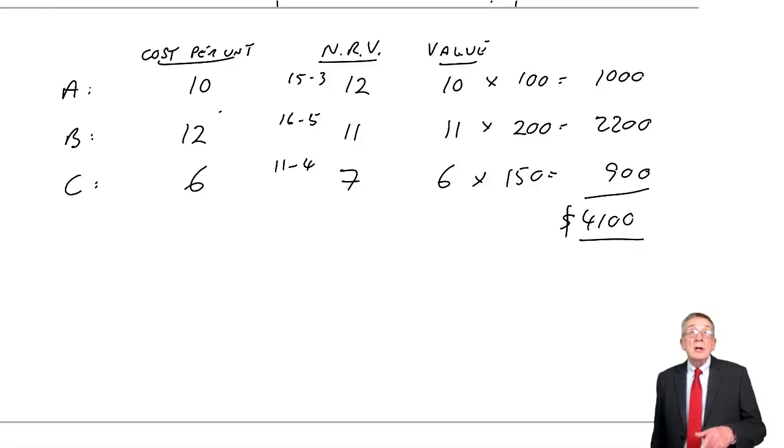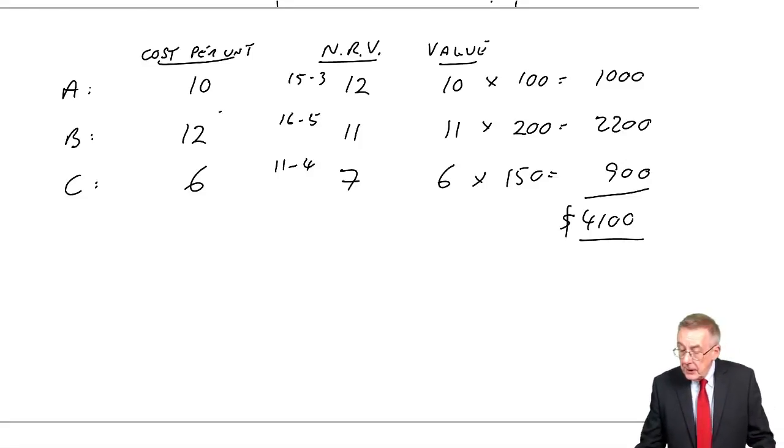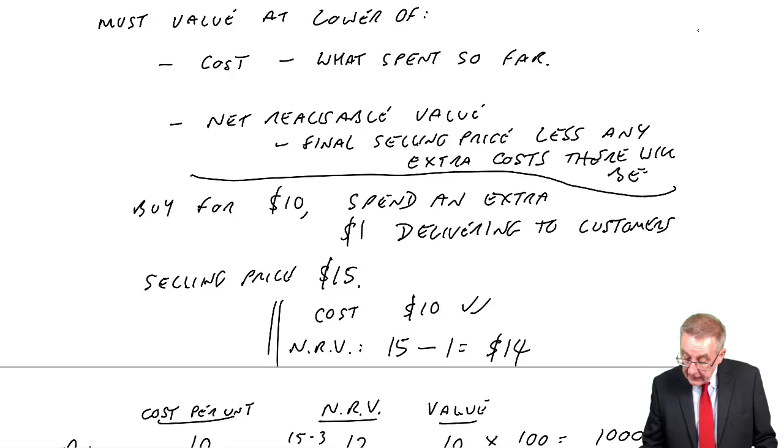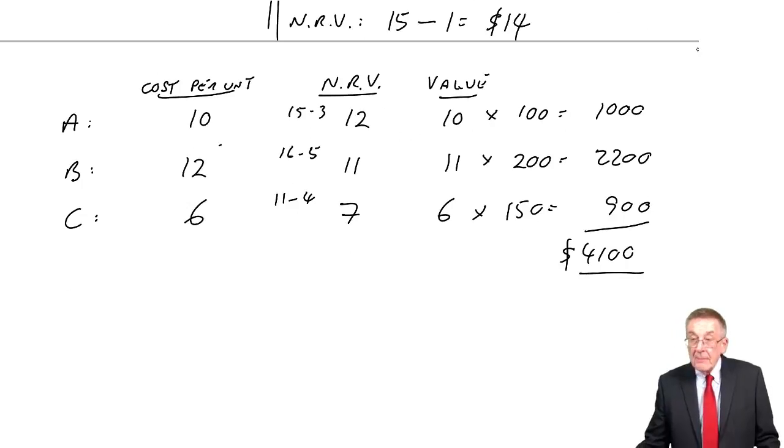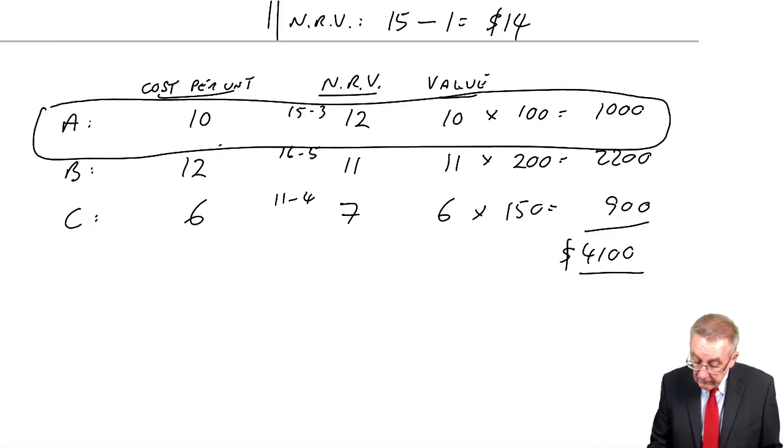So I hope that's clear, but do remember one thing I said before, that each unit is valued separately. If I had 100 units, look at A, for instance. I have 100 units, suppose 99 of them were fine, cost $10, net realizable value $12, fine, those 99 would be valued at $10.